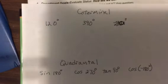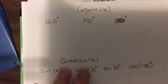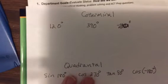First, co-terminal. That's where you have the same angle, same terminal side, but different angle measure. Different angle measure but same terminal side.